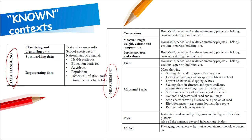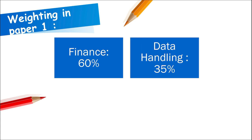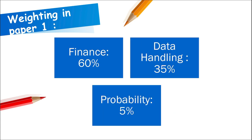Questions one, two, and three will normally be known contexts, and then questions four and/or five will have some unknown contexts. In Paper 1, the weighting will be: Finance 60%, Data Handling 35%, and the remaining 5% will be Probability. Because Probability is such a small percentage, it won't have its own question — sub-questions of Finance and Data will contain parts on Probability.